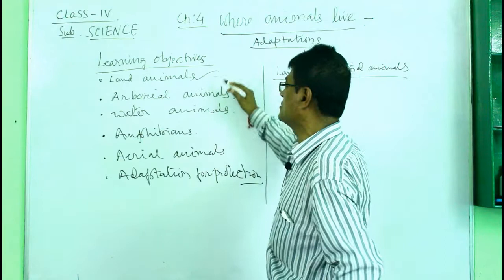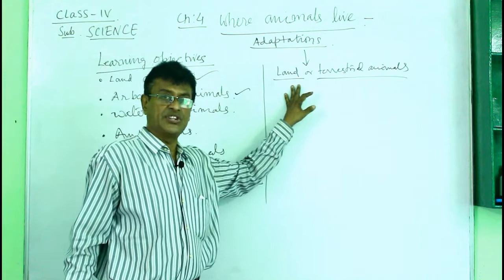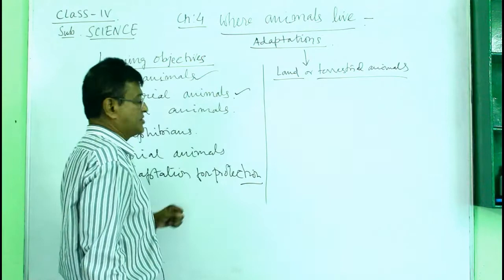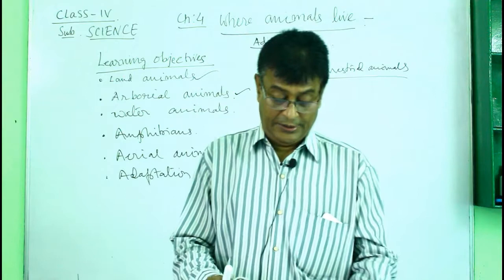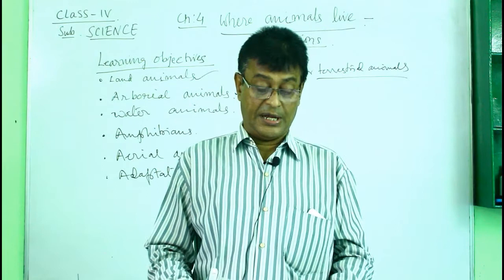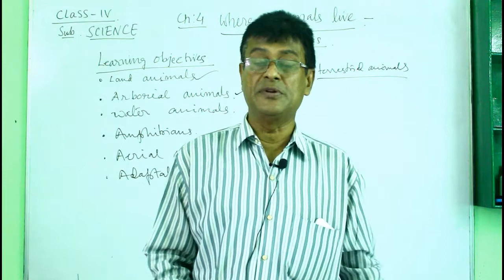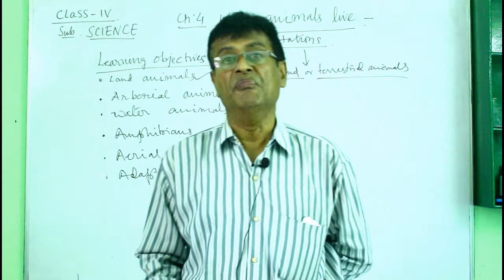We have come to know about terrestrial and arboreal animals. Now let us discuss land or terrestrial animals, their habitat and adaptations. Land animals stay in deserts, forests, and mountains in different regions — dogs, cats, tigers, and zebras. Some land animals such as snakes do not have legs, so they move by crawling.